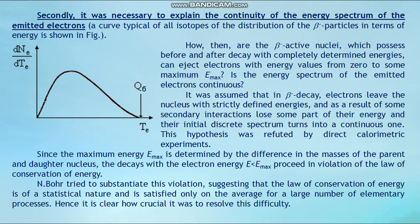Since the maximum energy E_max is determined by the difference in masses of the parent and daughter nuclei, decays with electron energy E less than E_max appear to violate the law of conservation of energy. Niels Bohr tried to justify this violation by suggesting that the law of conservation of energy is statistical in nature and satisfied only on average over a large number of elementary processes. This made resolving this difficulty especially crucial.